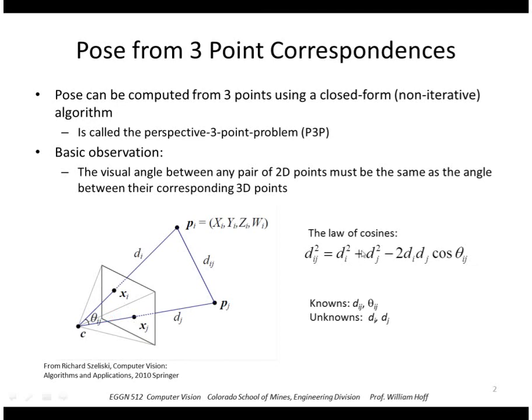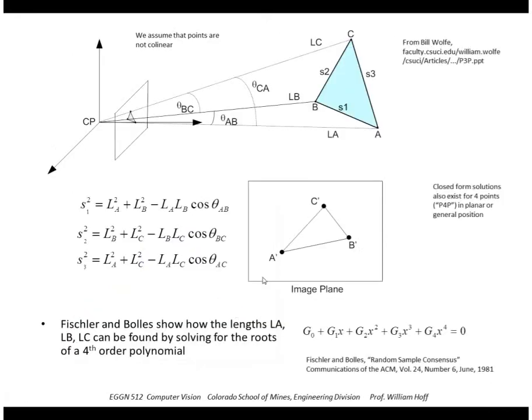A pair of points contributes an equation from the law of cosines, where dij is the known 3D distance between the points. We observe the angle theta sub ij, but what we don't know is the distance di and dj. If we have 3 points, we have 3 pairs from A, B, and C, so 3 angles. We then have 3 equations and 3 unknowns: the lengths l sub a, l sub b, and l sub c.